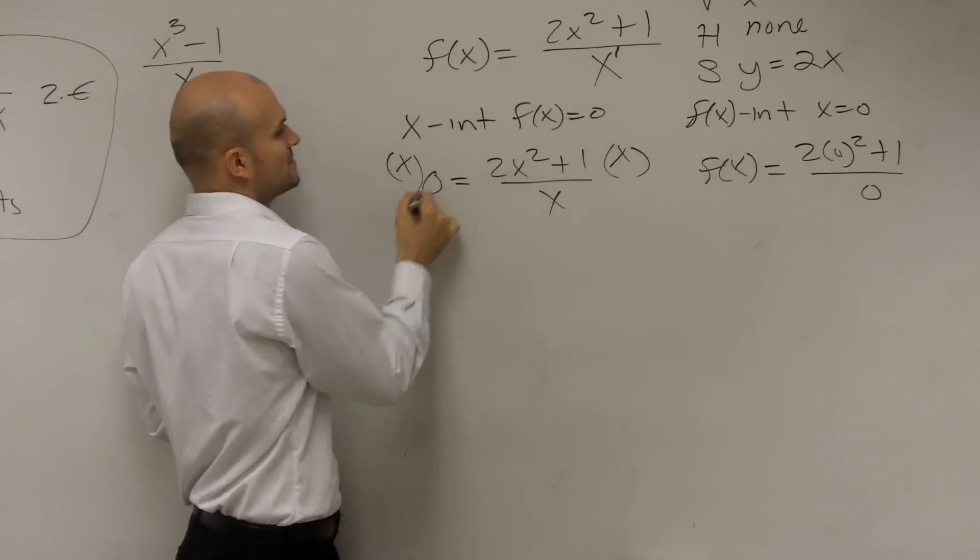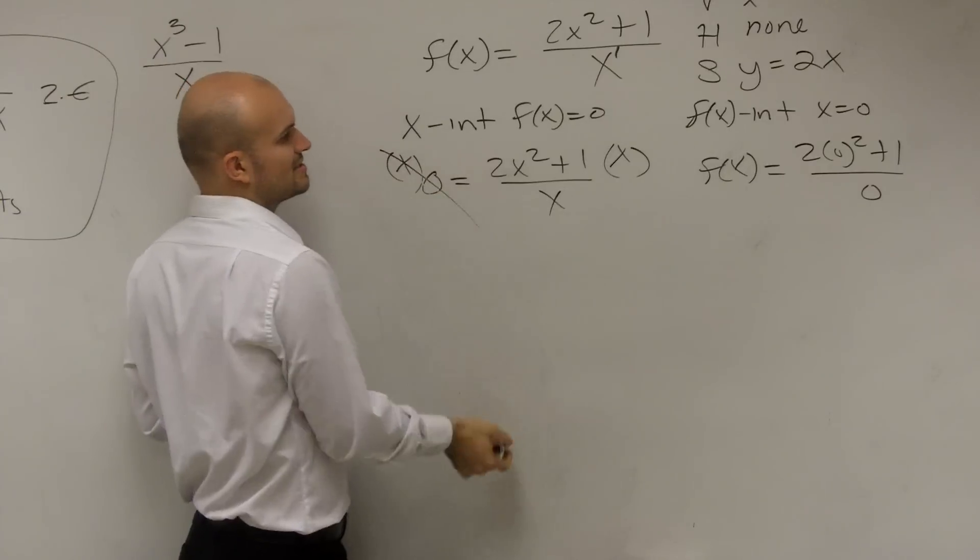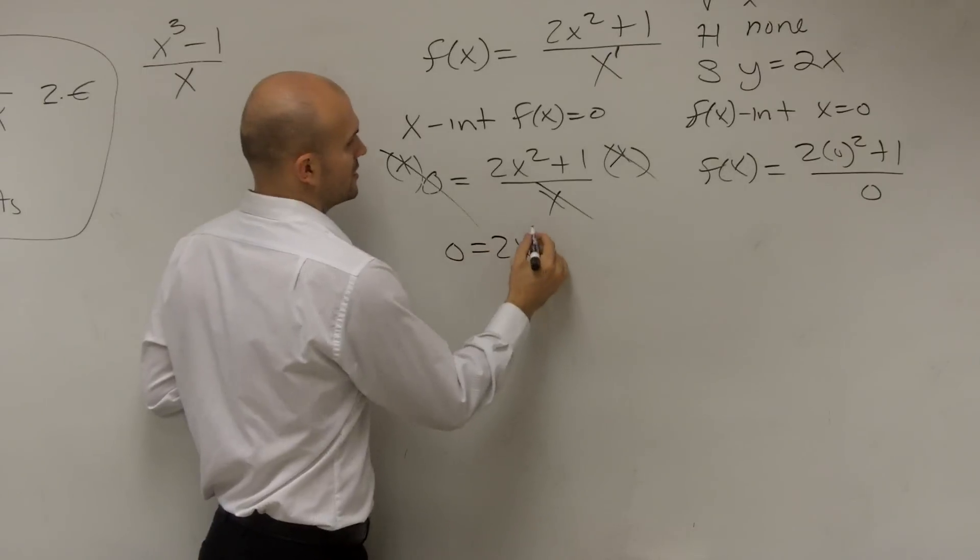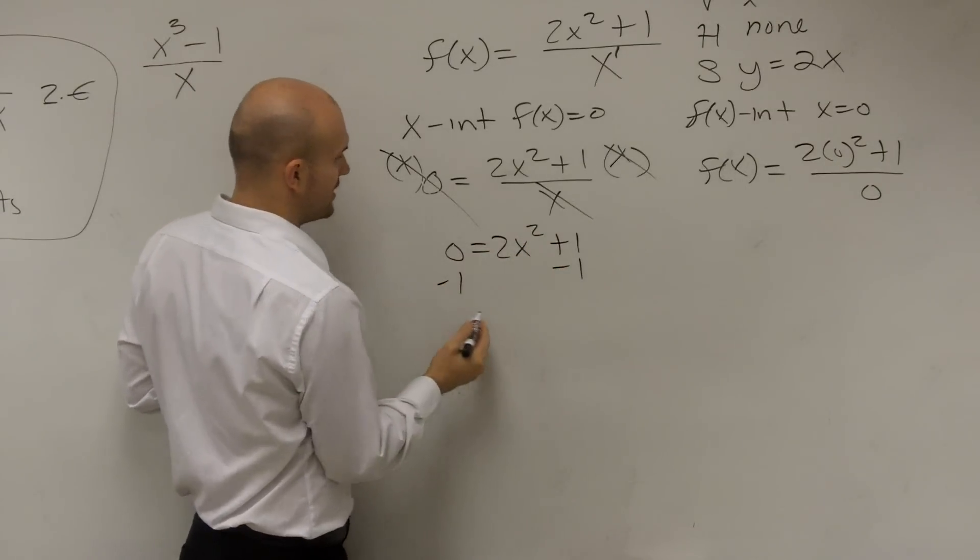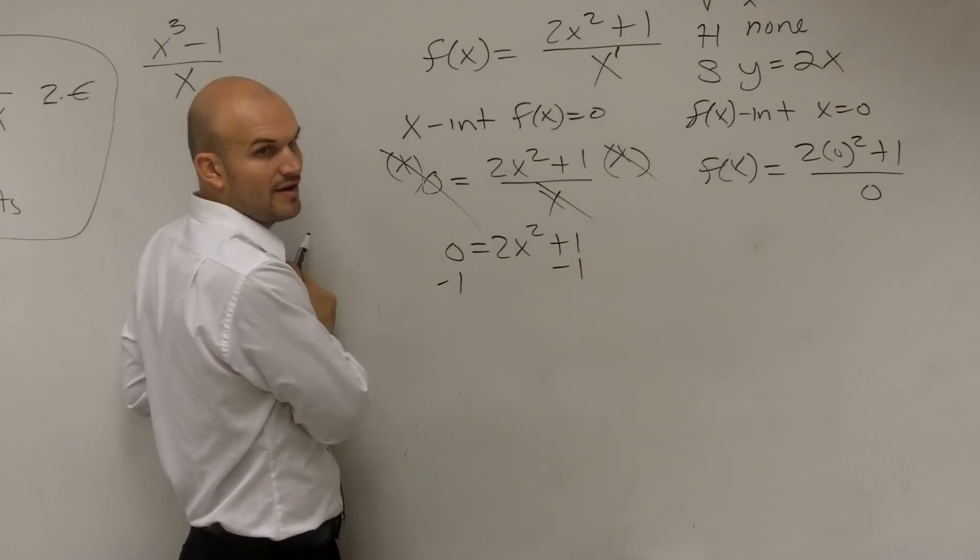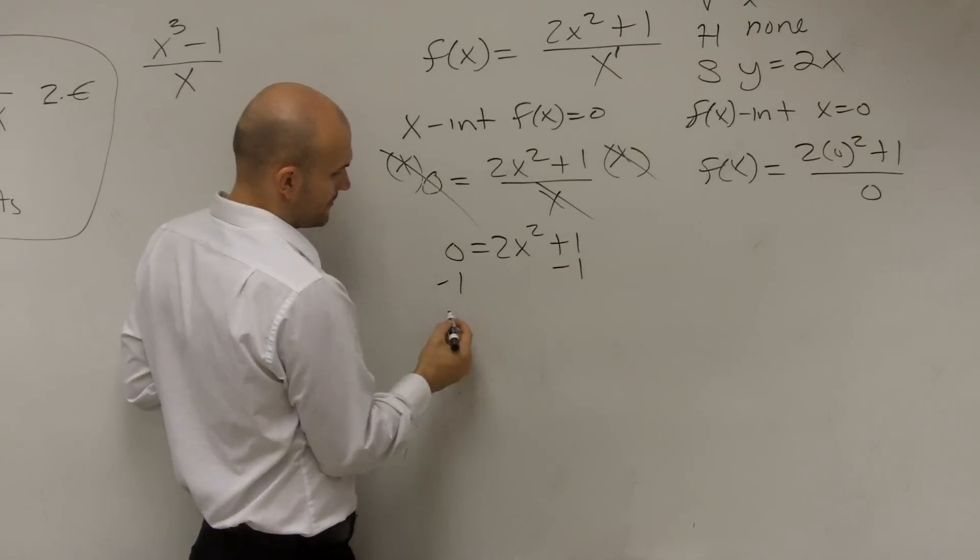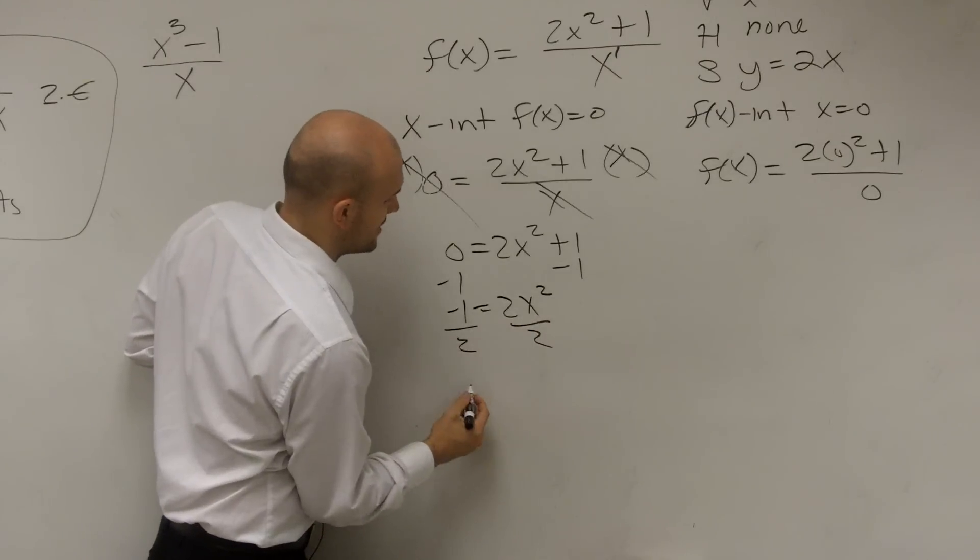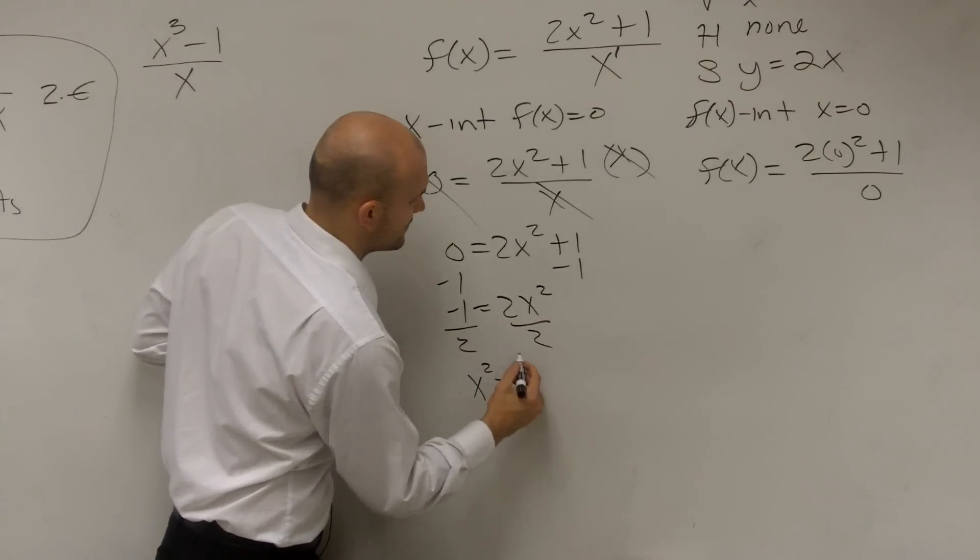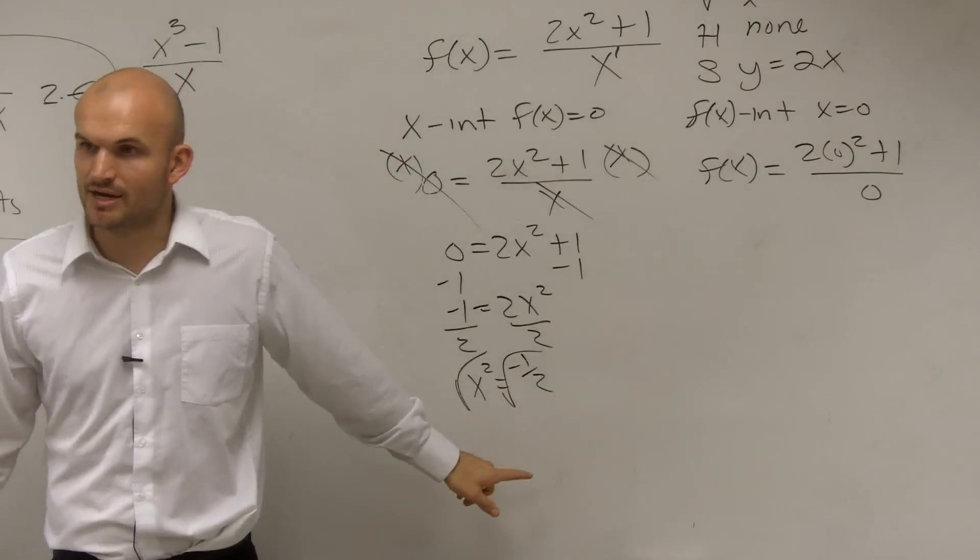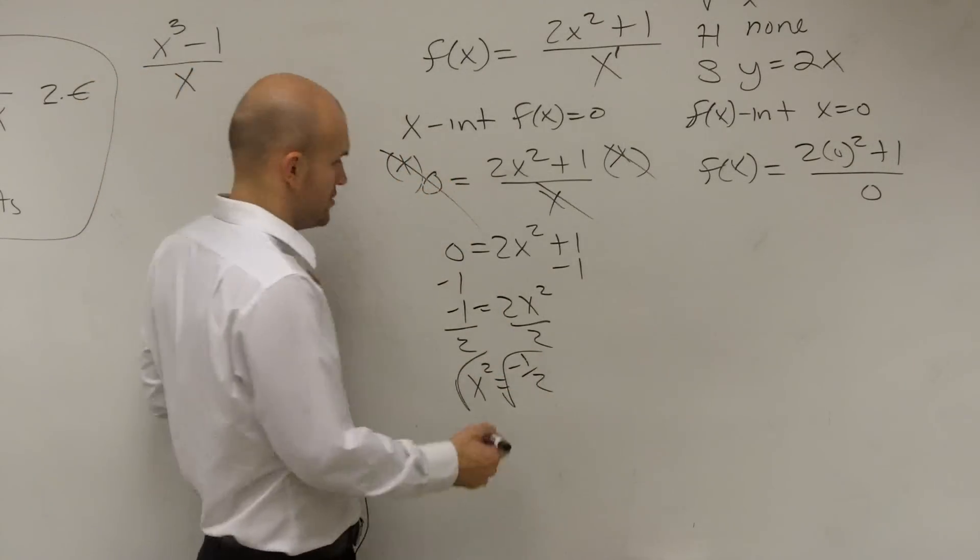So you multiply it. Anything times 0 is 0. Anything divided by itself is 1, so you're left with 0 equals 2x squared plus 1. As I subtract a 1, I automatically know that I'm going to have to take the square root of a negative number, right? Hopefully now you guys see x squared equals negative 1 half. I cannot take the square root of a negative number, so therefore do I have an x-intercept? No.